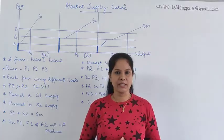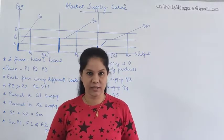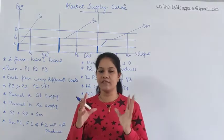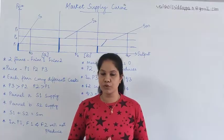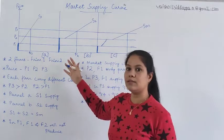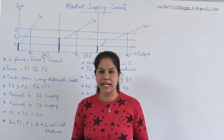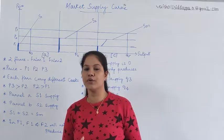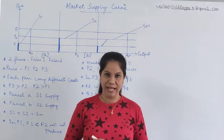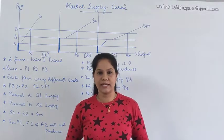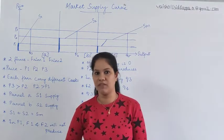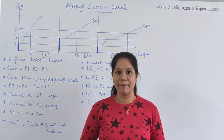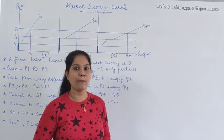How exactly does the market supply curve work? In previous classes, we already saw the relationship between price and supply — the law of supply: when price increases, quantity supplied also increases; when price decreases, quantity supplied also decreases. We discussed this before. Now let's move from individual supply curve to market supply curve.